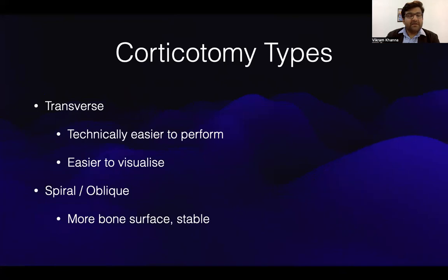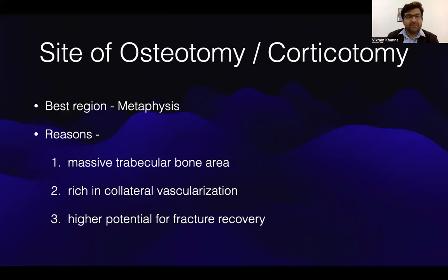Regarding corticotomy types by direction: a transverse corticotomy is technically easier to perform and easier to visualize. A spiral or oblique corticotomy provides more bone surface, resulting in a good regenerate, and is inherently more stable. The best region for the site of osteotomy or corticotomy is the metaphysis of the bone, because it has a massive trabecular region which is rich in collateral vascularization and has a higher potential for fracture recovery.